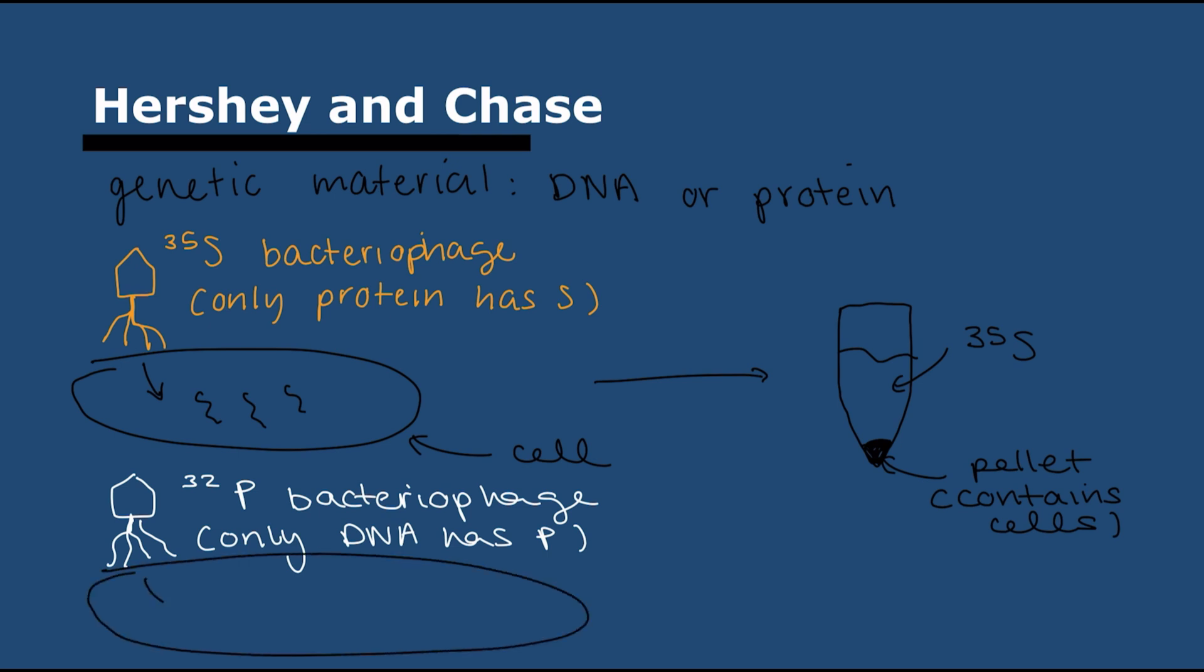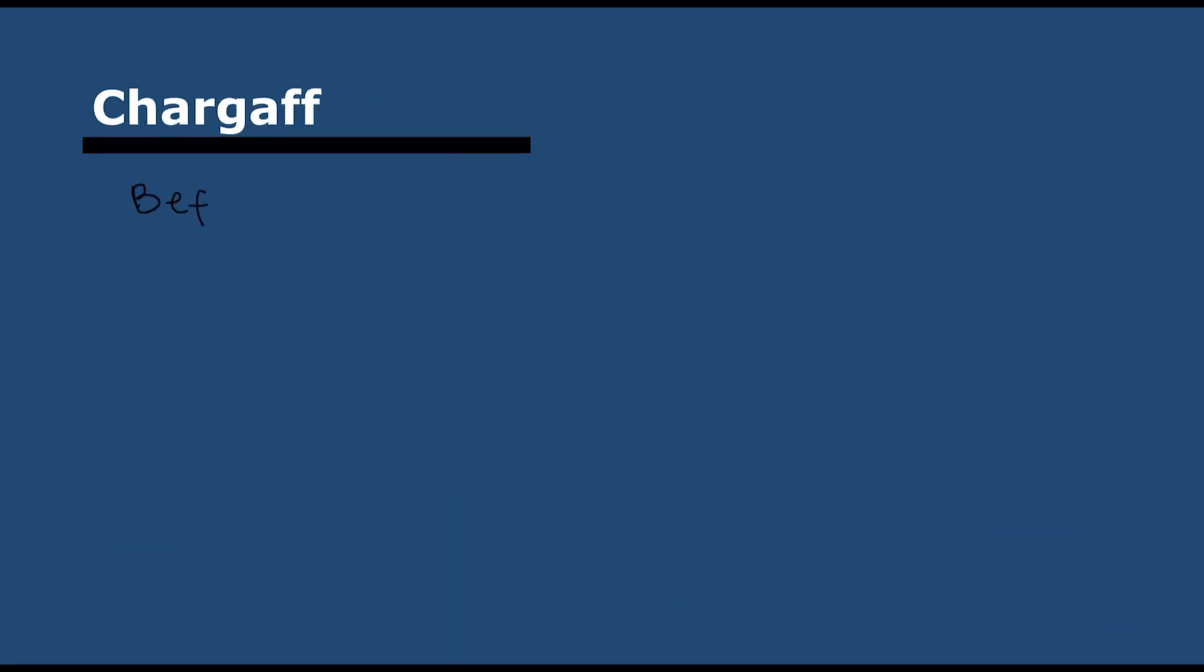They did it with sulfur and there was nothing in the pellet—the sulfur was in the supernatant, not in the cells. So the protein had not been put into the cells. But when they did it with phosphorus, the pellet contained radioactive phosphorus, meaning the DNA had entered the cells. So the genetic material was DNA.